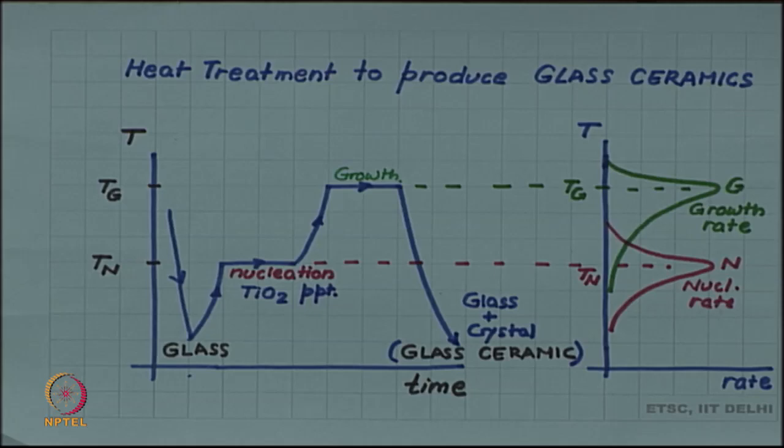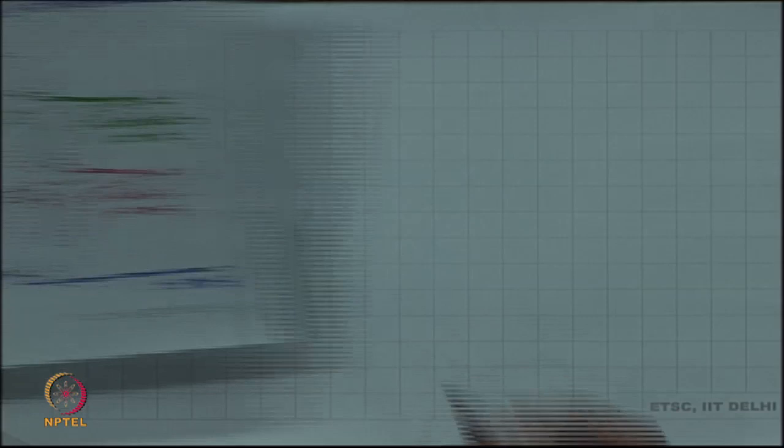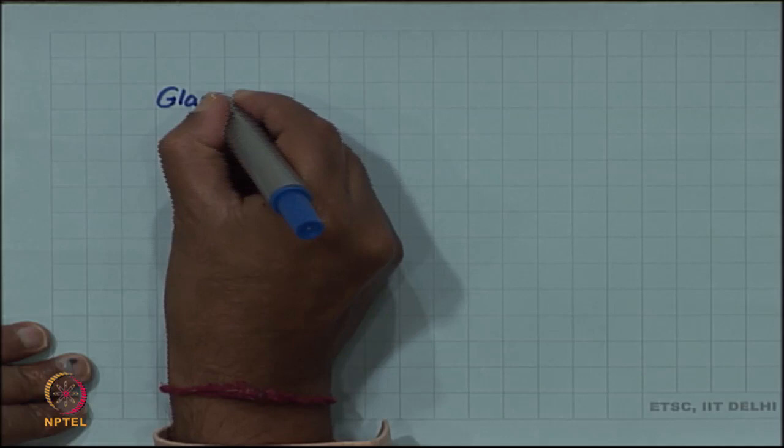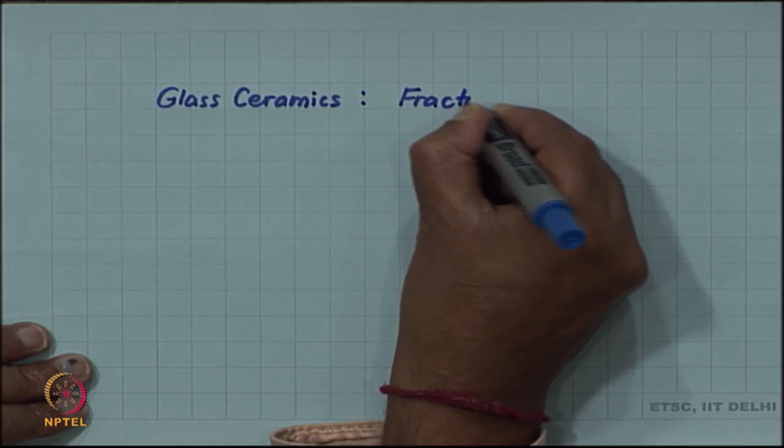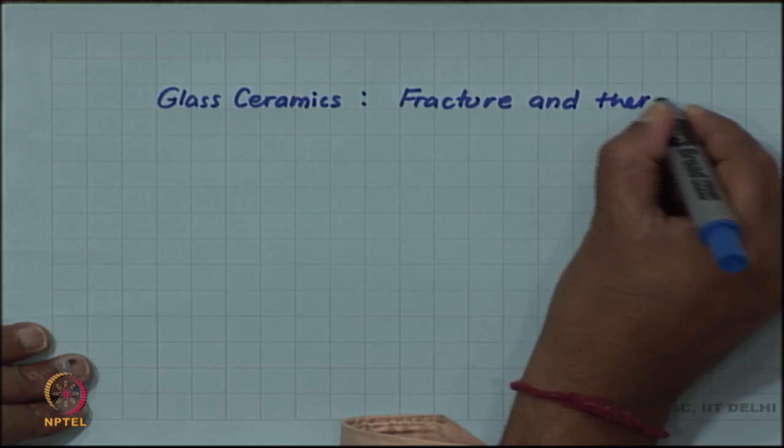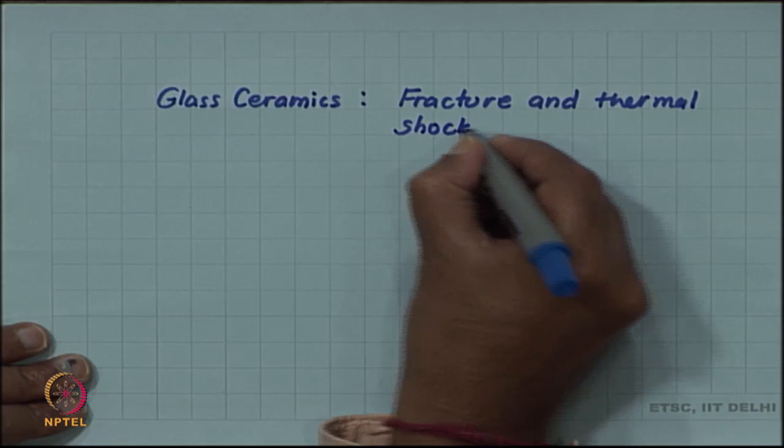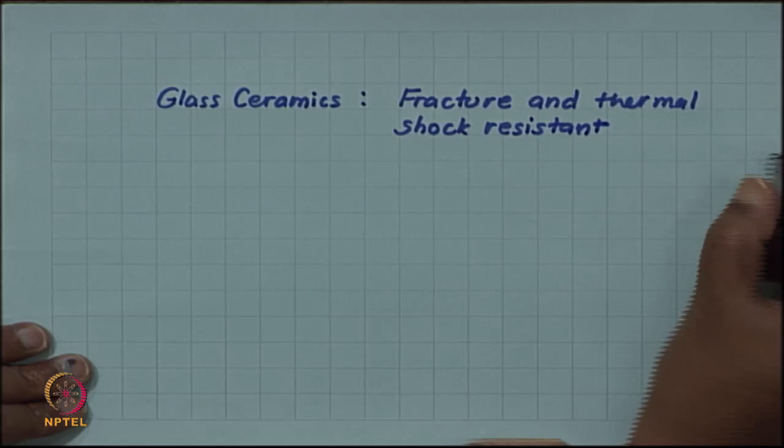The ceramic produced by this heat treatment, the glass ceramic, is highly fracture resistant and thermal shock resistant. This is mainly due to its fine grain size.